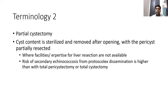The cavity can be managed by packing with omentum, leaving a drain, or suturing. Where facilities and expertise for liver resection are not available, partial cystectomy is a good option, with a small chance of relapse, provided medical prophylaxis is given and spillage is avoided.